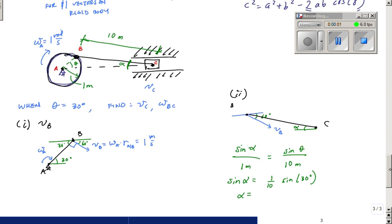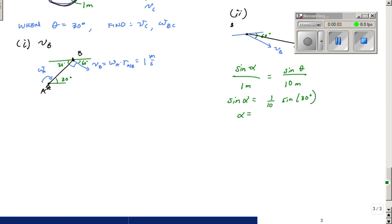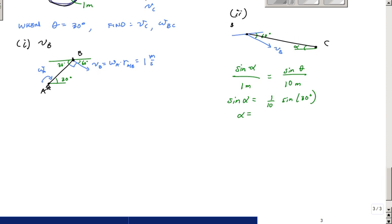Alright, so we're back. Hey YouTubers. So alpha from the calculator said it was 2.86, 2.87 degrees. Make sure you have your calculator in radian or degree mode to do this thing here. This is 2.87 degrees.